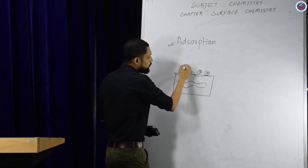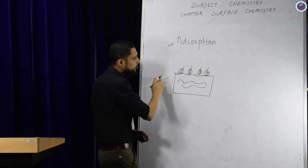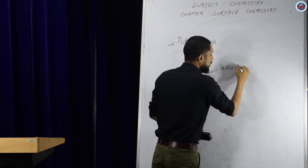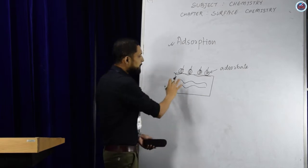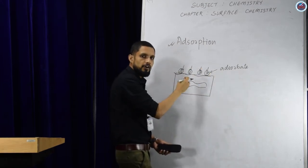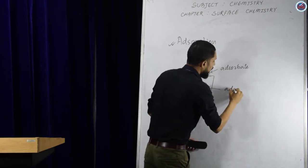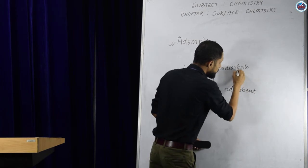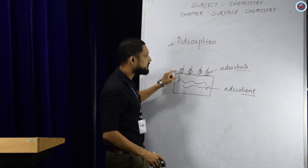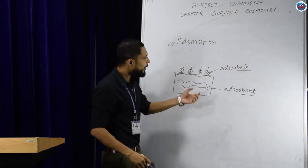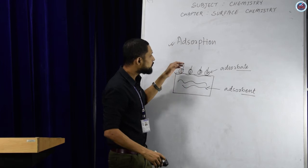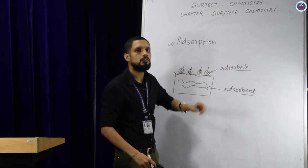The substance which gets attracted and retained on the surface of another substance is known as Adsorbate (A-D-S-O-R-B-A-T-E). The substance on the surface of which the adsorbate is attracted and retained is known as Adsorbent. Adsorbent is the substance which attracts and retains the molecules of adsorbate on its surface.